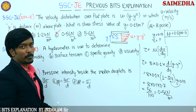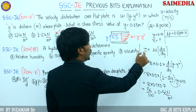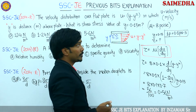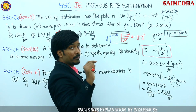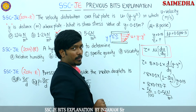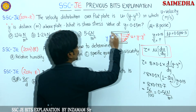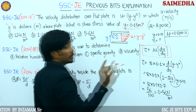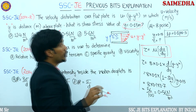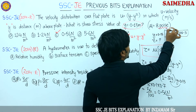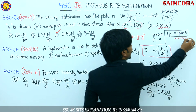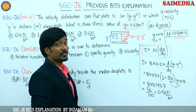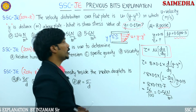Key points from this problem: first, remember the formula tau equals mu du by dy. Second, differentiate the velocity equation and substitute the given Y value. Third, unit conversion is very important - convert Poise to Pascal second using 1 poise equals 0.1 Pascal second.